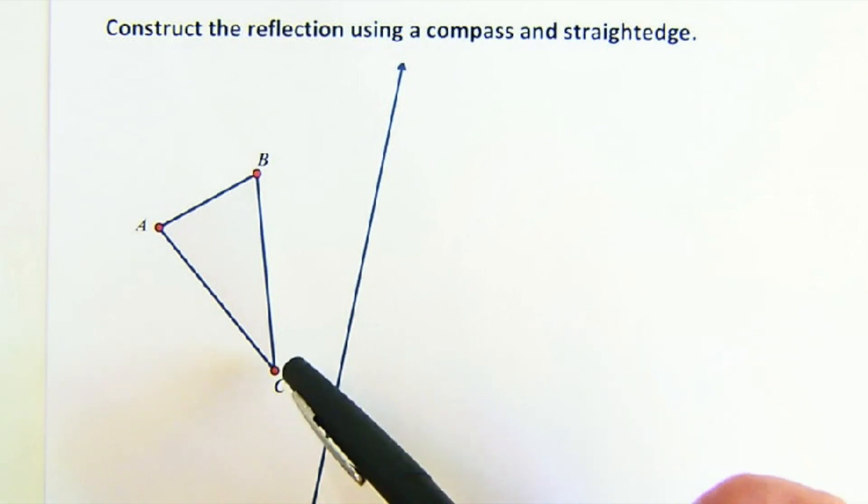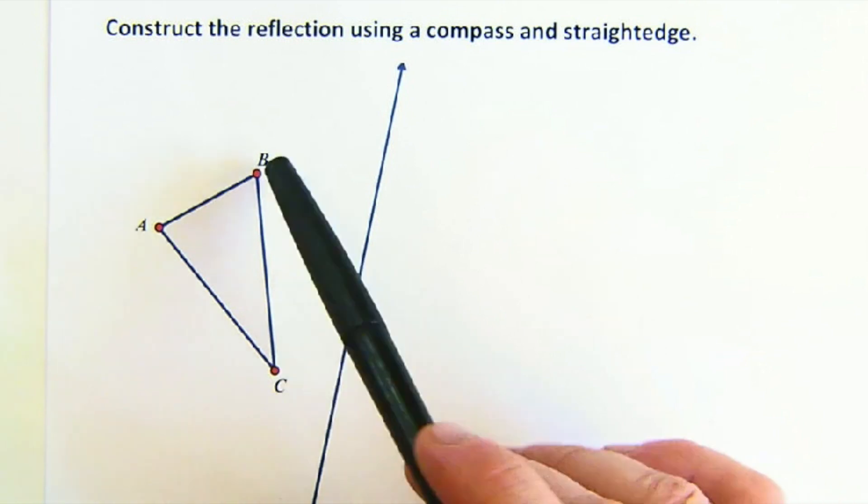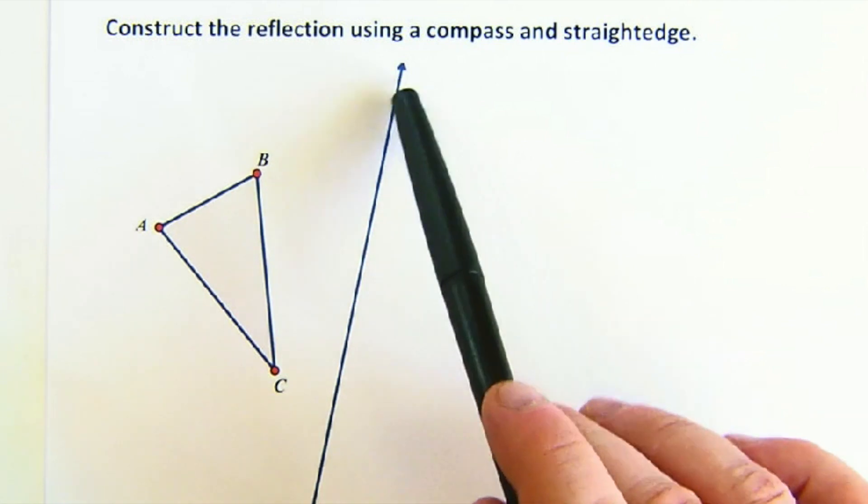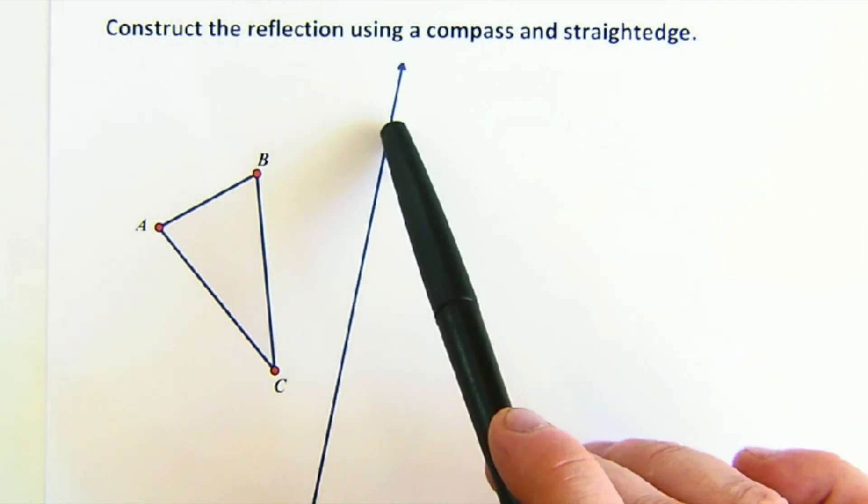Now, you say, well, why is that construction helpful? Well, remember, a reflection moves a point to the other side, and this line becomes a perpendicular bisector.